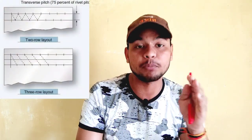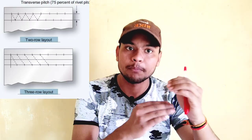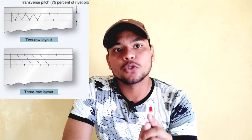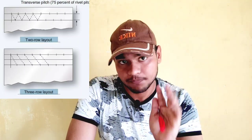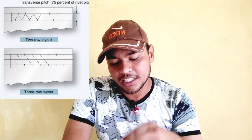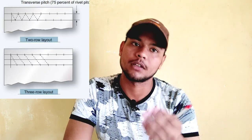The last terminology is transverse pitch, which is similar to rivet pitch but refers to the perpendicular distance between rivet rows — as you can see in the figure. Transverse pitch should always be 75 percent of the rivet pitch. The smallest transverse pitch can be two and a half times the diameter (2.5D). All these terminologies are very necessary when studying riveting.